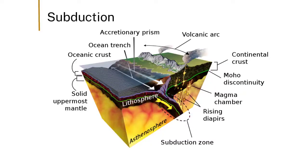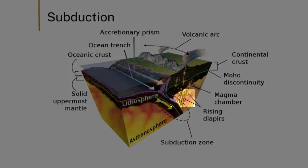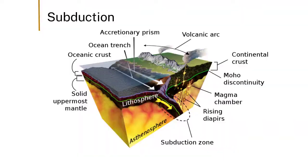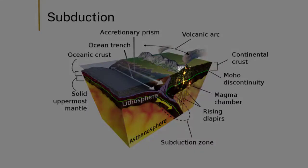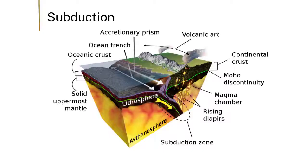Interestingly, as the slab goes down and reaches a certain depth, it contains hydrous minerals like chlorite. At that depth, the chlorite is no longer stable and loses its water. That water goes into the mantle above the slab and causes the mantle to melt, producing magma which can rise up, fractionate, crystallize, and form granitic rocks and volcanoes.